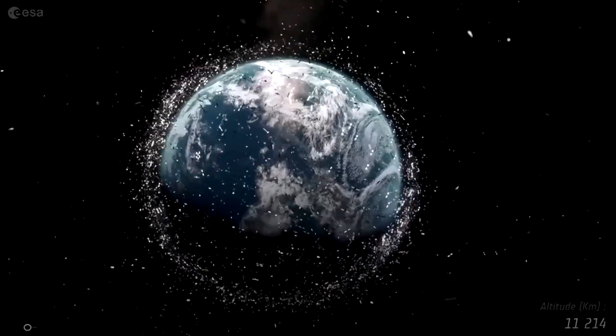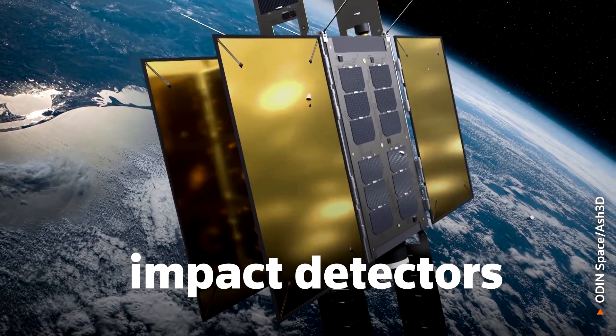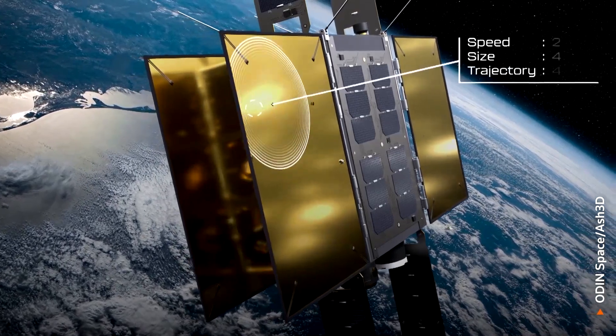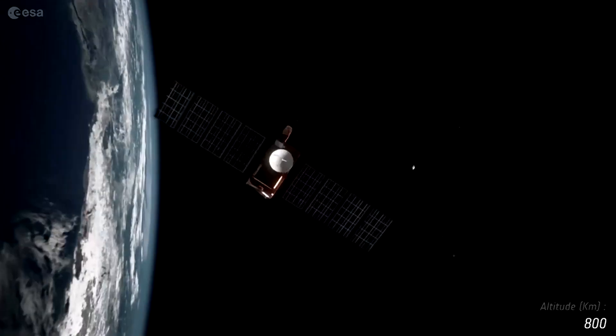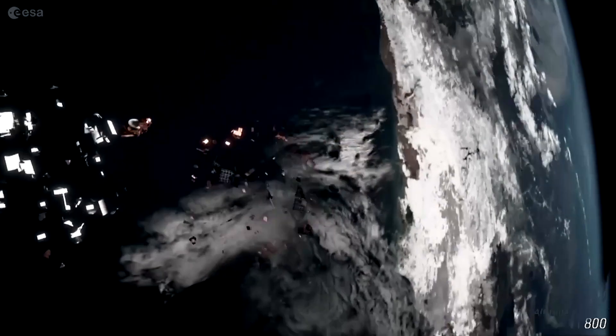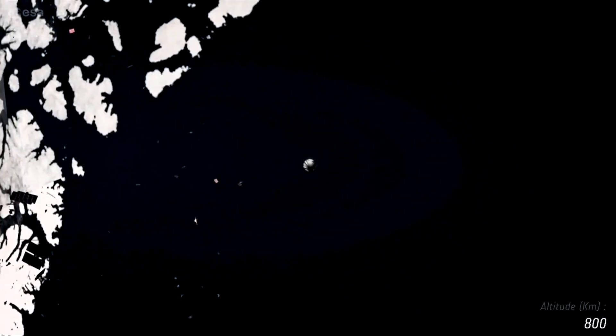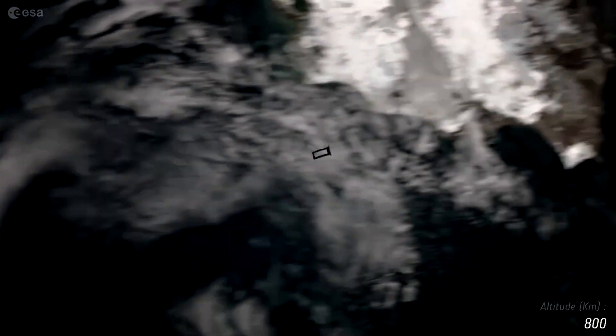UK startup Odin Space has developed in-orbit impact detectors that it says can help track tiny pieces of space junk. Collision with even the smallest invisible debris can cause significant damage to other satellites and spacecrafts.